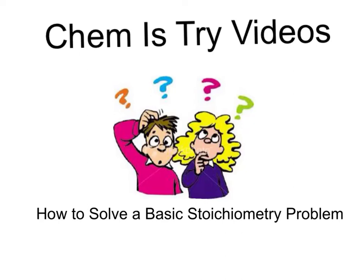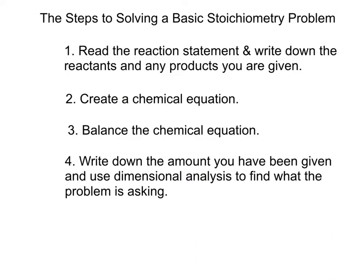Chemists try — how to solve a basic stoichiometry problem. This is one of the simpler problems found on the mandatory pass exam. If you watched the unit conversion video before this, you will follow the same format and now we're going to apply the basics of a mole ratio. The basic steps to solving a stoichiometry problem: first, read the reaction statement and write down the reactants and any products you are given. If no products are given, determine what type of chemical equation it is and predict the products — single replacement, double replacement, combustion — then balance the equation and write down the amounts given so we can use dimensional analysis to solve this.